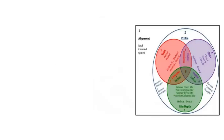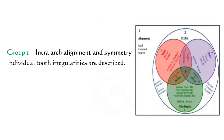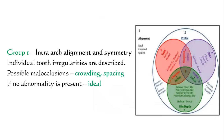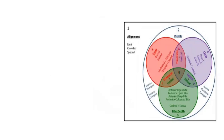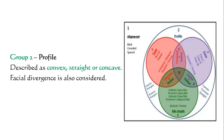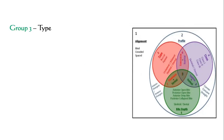Group one covers intra-arch alignment and symmetry, where individual tooth irregularities such as crowding or spacing are described. Group two is the profile, assessed as convex, straight, or concave; divergence — whether orthognathic, antidivergent, or posterodivergent — is also evaluated here. Group three is type, where transverse discrepancies such as crossbite or scissors bite are evaluated, including whether the crossbite is bilateral or unilateral, buccal or palatal, and whether it is skeletal or dental.